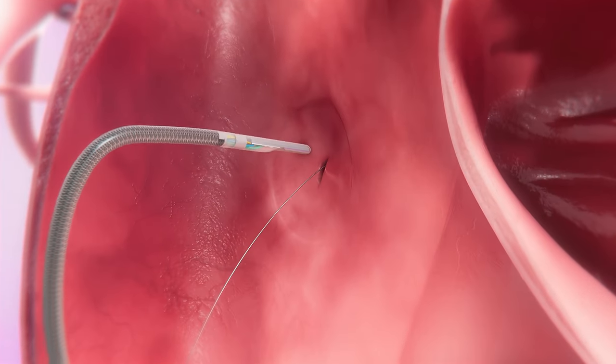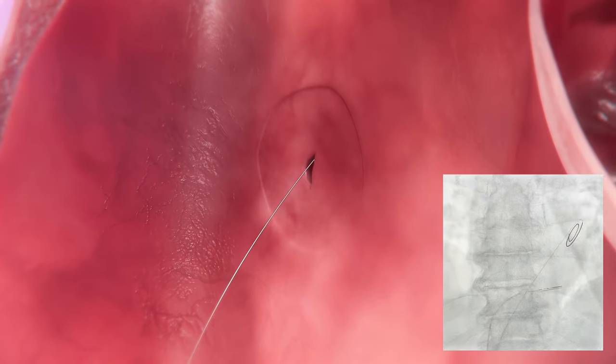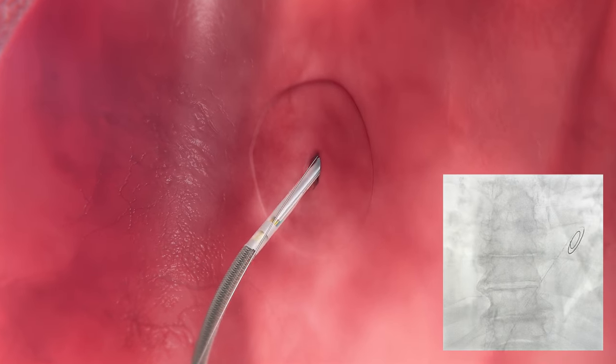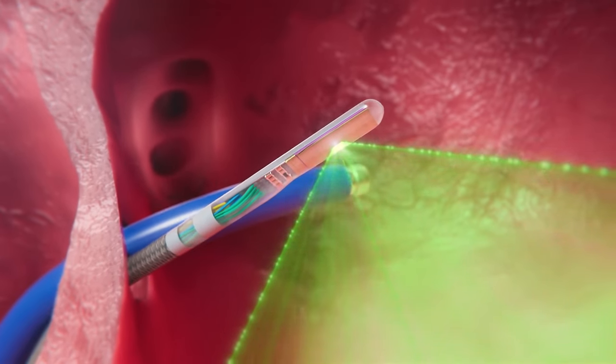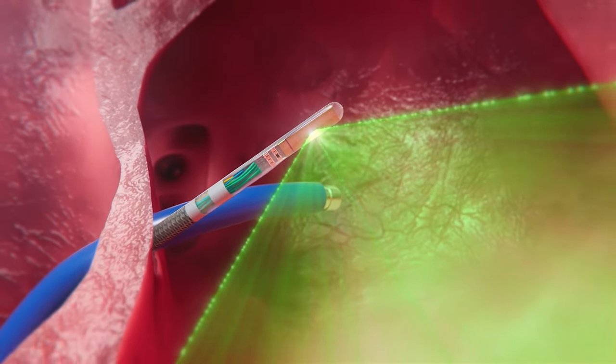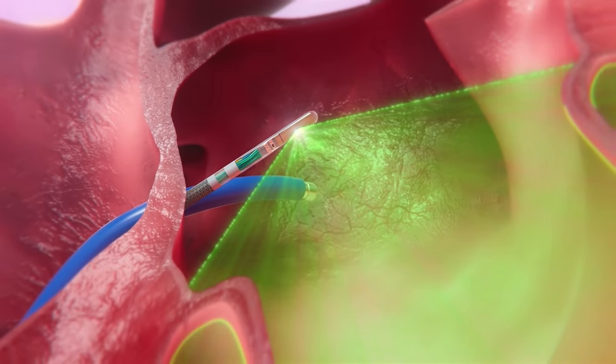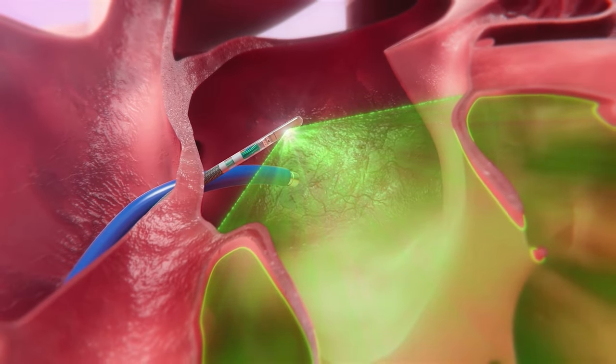The Verisight Pro catheter's atraumatic tip was designed to provide confidence while maneuvering and help minimize the risk of complications. The 9 French diameter, along with proper dilation, also allows for all devices to be advanced through the same transeptal puncture.